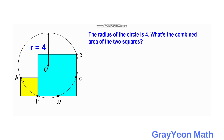We notice that this chord AE is actually a diagonal of the yellow square. Next, we connect B to E to make a chord, and we notice again that this is a diagonal of the blue square. Since BE is a diagonal of the blue square, this angle here should be 45 degrees, and this angle here should also be 45 degrees.